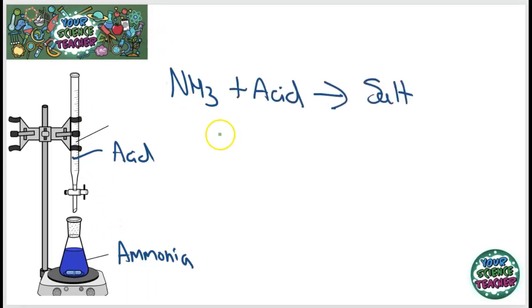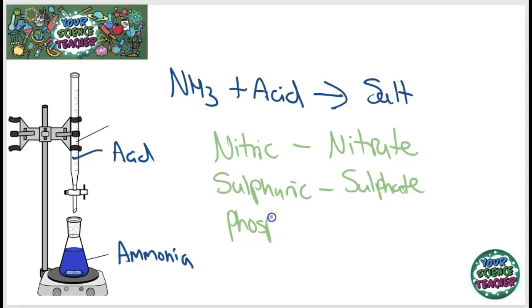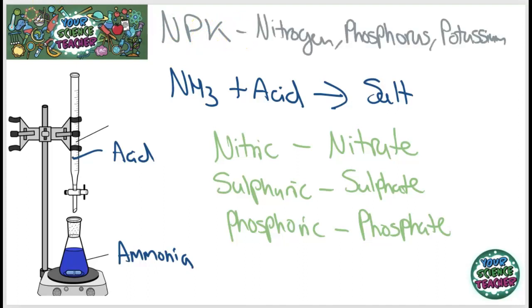So, just a quick recap. If we have nitric acid, we will make a nitrate salt. Sulfuric acid, we will make a sulfate salt. And if we have phosphoric acid, we will make a phosphate salt. And the key fertilizers made in industry are known as NPK fertilizers because they either contain a lot of nitrogen, phosphorus, or potassium. These are all essential minerals for a plant.